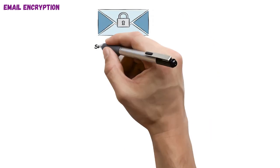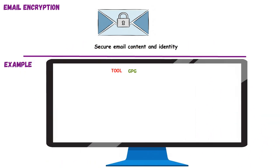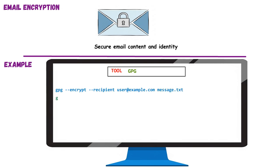Email encryption. This topic focuses on protecting email contents and verifying sender authenticity using encryption. It's like sealing a letter in a locked envelope that only the recipient can open. Encrypted emails prevent eavesdropping, spoofing, and tampering during transmission. We'll demonstrate with GPG, a popular open-source tool that uses public key encryption. We encrypt an email message to a recipient using their public key, ensuring only they can decrypt it. The output confirms encryption with the correct key ID and email identity.